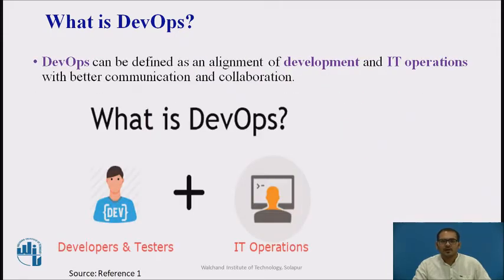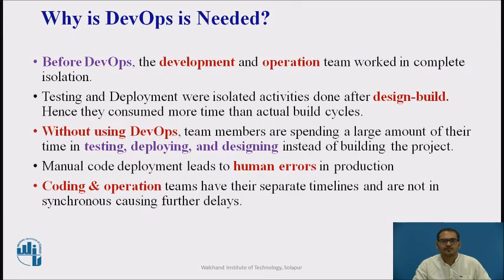What is DevOps? In simple words, DevOps is a combination of two words: development and operations. Before DevOps, the development and operation teams worked in complete isolation. Testing and deployment were isolated activities done after the design build. Hence, they consumed more time than the actual build cycles.